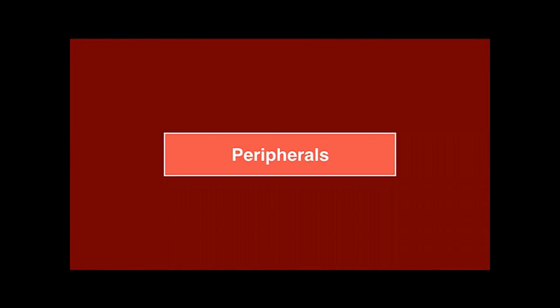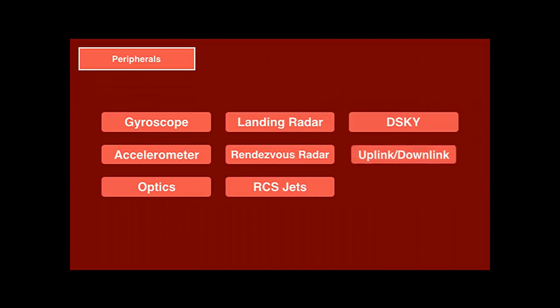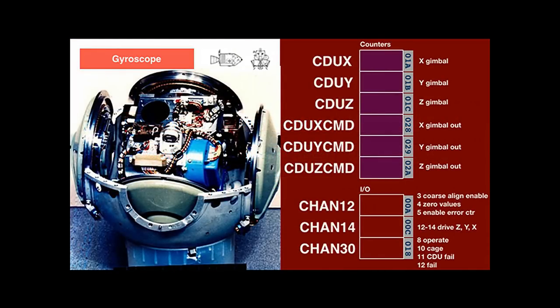Next, let's look at the devices connected to the computer. We will look at the core devices that allow the Apollo guidance computer to maintain the state vector, some quite special devices you don't see on many other computers, and the peripherals used for communication with astronauts and mission control. The gyroscope is the core peripheral that the Apollo guidance computer was originally built around. The Apollo guidance computer rotates it into a certain base position with the CDU command counters, and then the gyro detects rotation around the three axes of the spacecraft that can be read from the CDU counters.